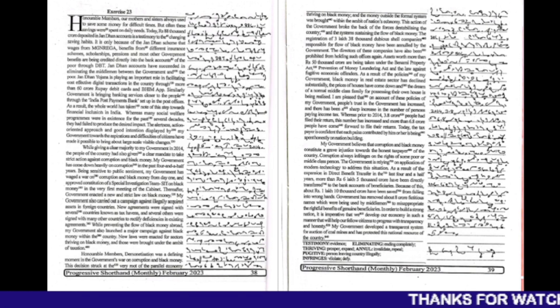Government has removed about 8 crore fictitious names which were being used by middlemen to misappropriate the rightful benefits of genuine beneficiaries.